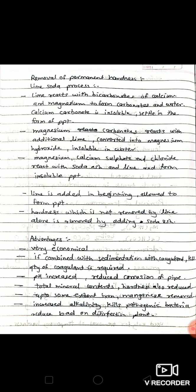There are various advantages of soda lime process. This method is very economical if it is combined with sedimentation and coagulation. Less quantity of coagulant is required. pH is also increased in this method, which reduces corrosion of pipes. The total mineral content of water is also reduced to a certain extent. The iron and manganese are also removed from the water.